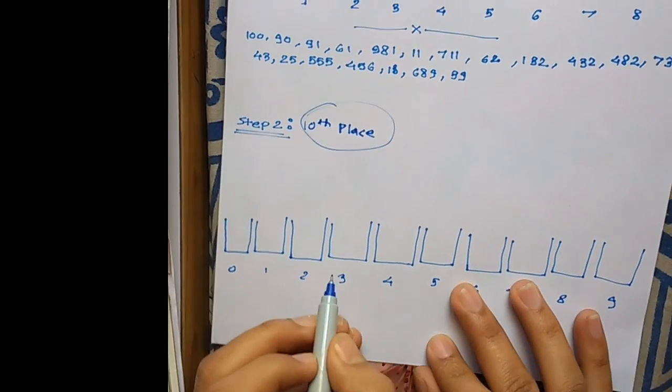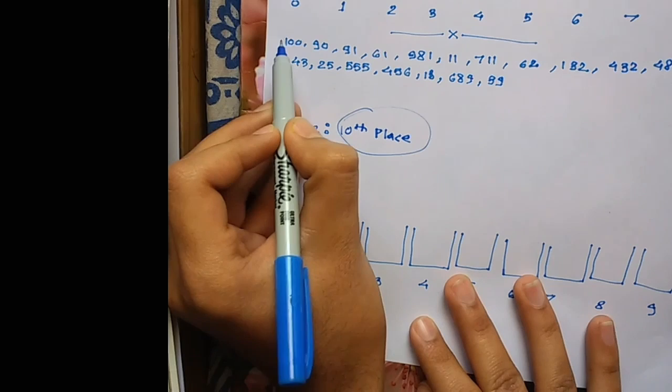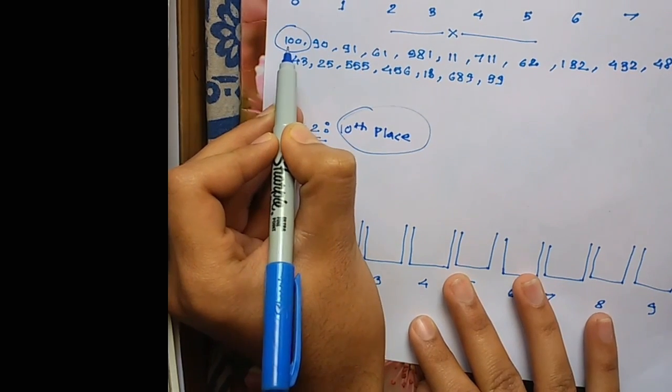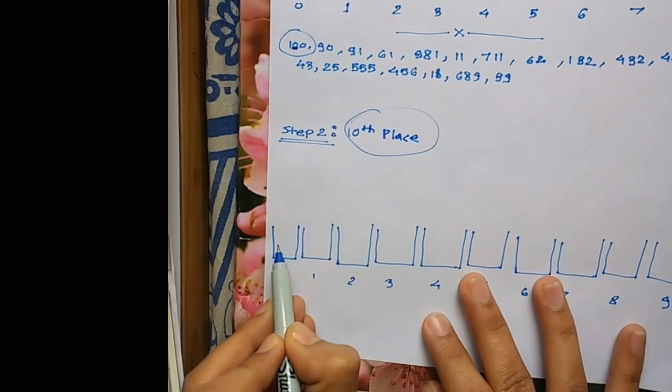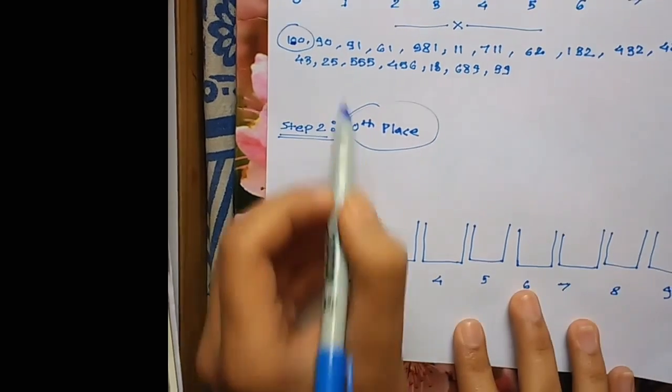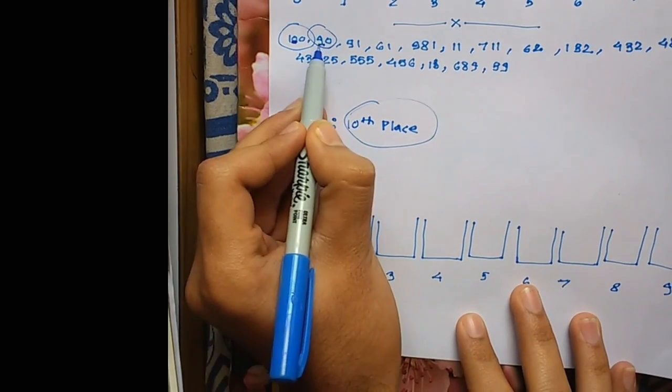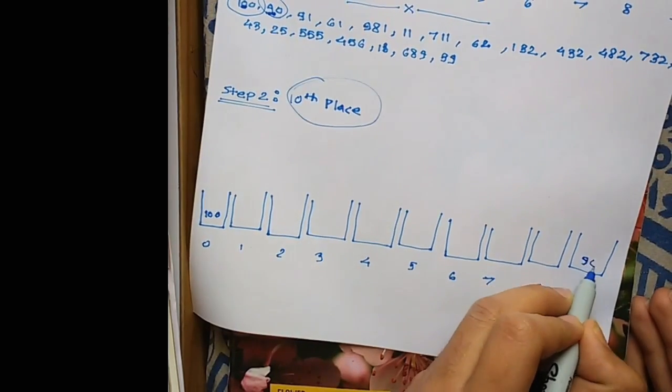By now it's obvious that we consider number 100, and in 100 the 10th place is 0, so 100 goes in bucket 0. It's that easy. In 90, the 10th place is 9, so 90 goes in bucket 9.